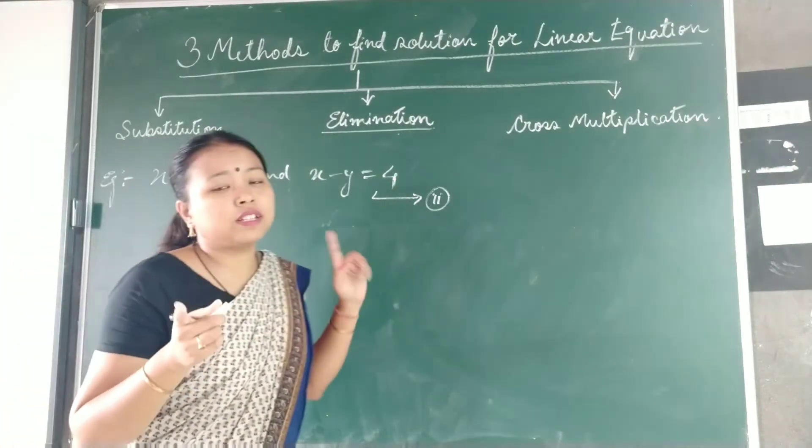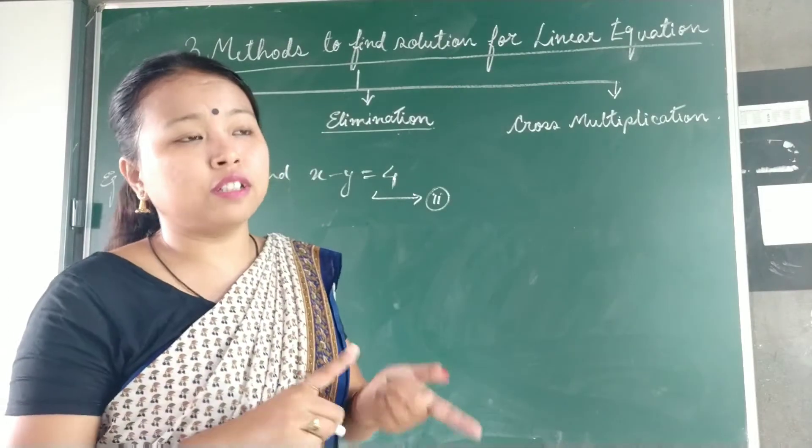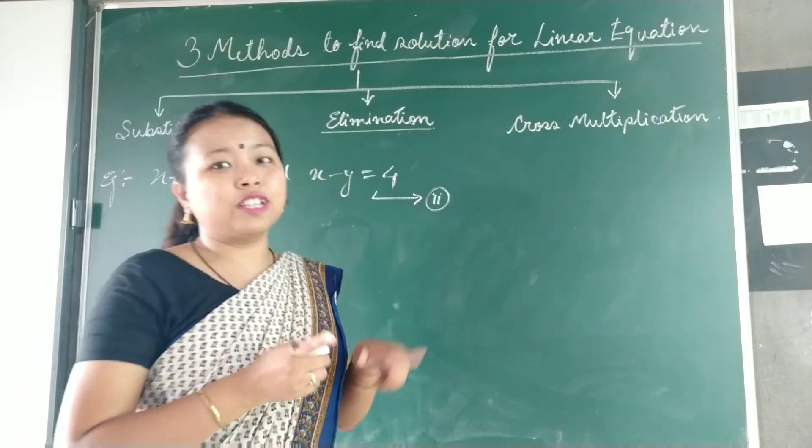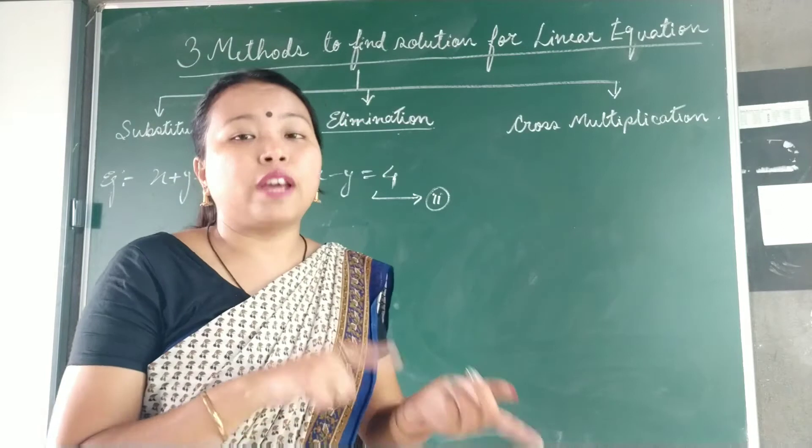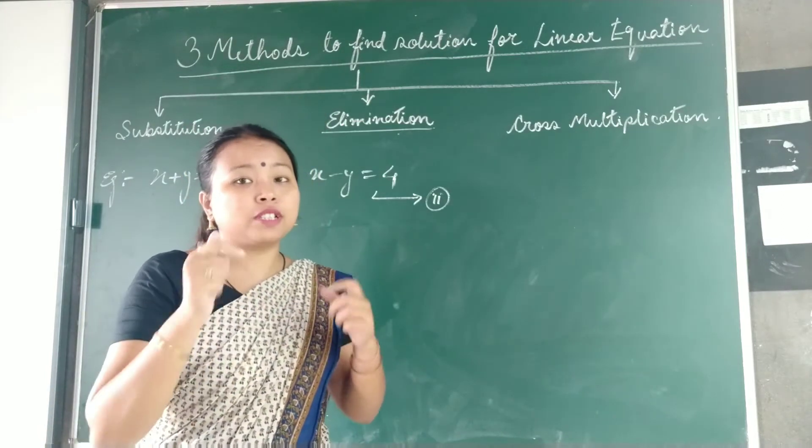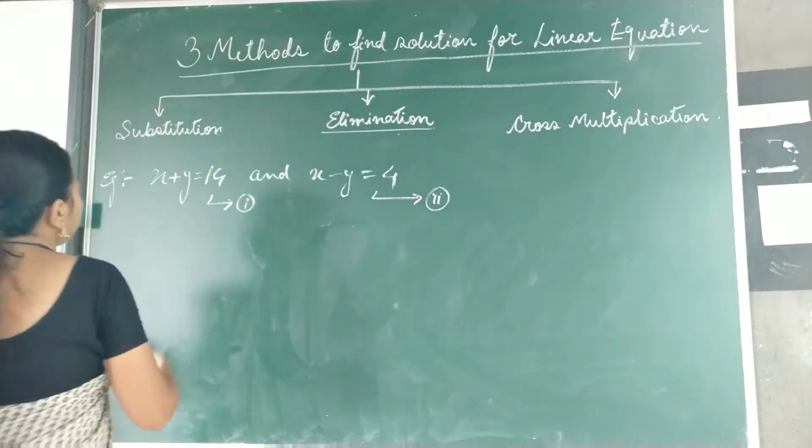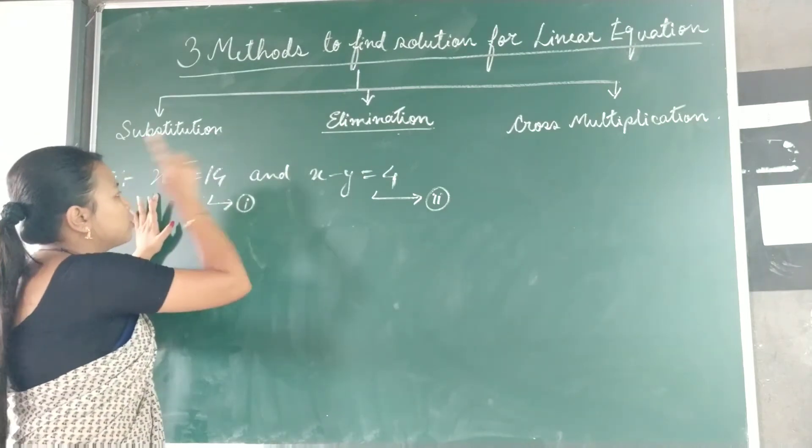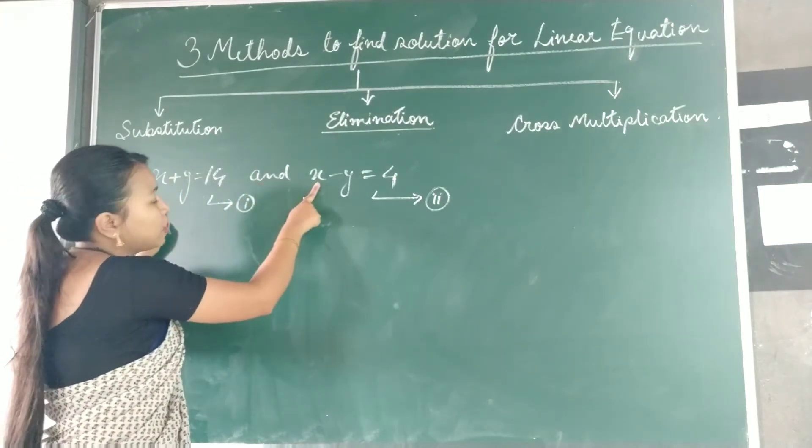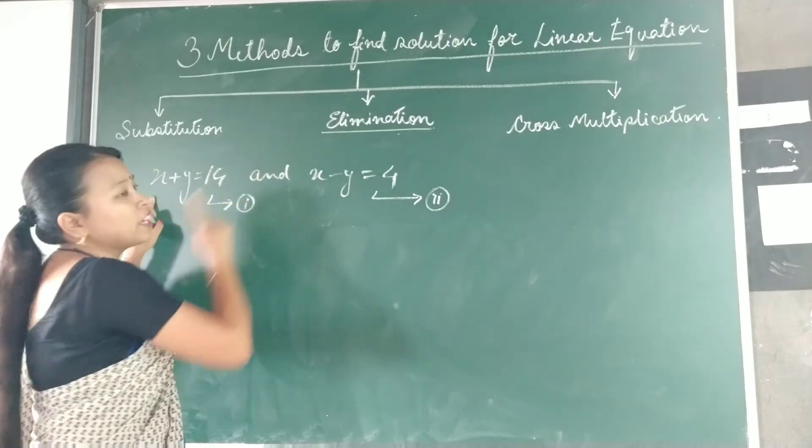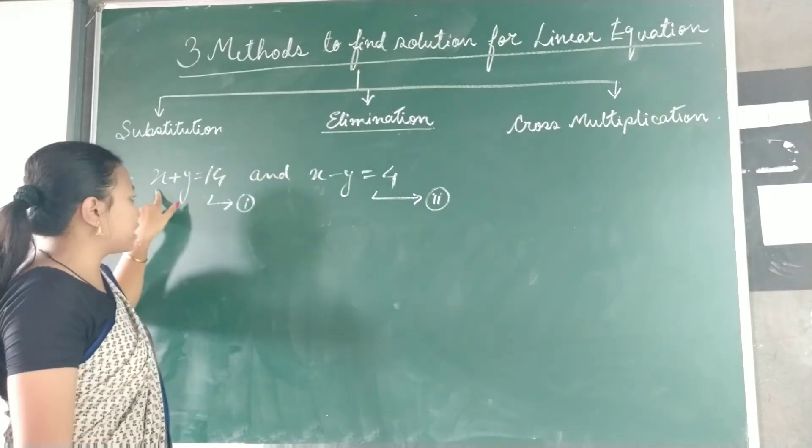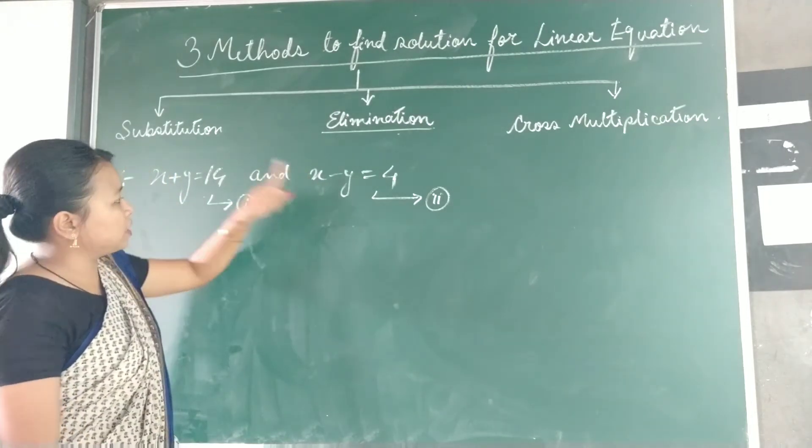Elimination means eliminating the coefficient from both equations and getting the value of the second variable which is left out. So here I am going to eliminate x. For that, I want to first compare the coefficient of x in both equations.